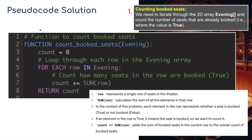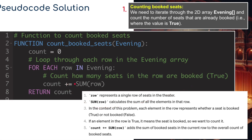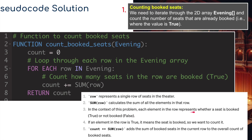So let's start with the first bit - counting booked seats. I've created a function called 'count_booked_seats' using the array 'evening', with comments throughout the code. We set the count to zero, then loop through each row in the evening array - 'for each row in evening' - and use 'count += sum(row)' then return the count. This counts how many seats in each row are booked. 'sum(row)' calculates the sum of all elements in the row - since each element is true or false, true counts as one. So 'count += sum(row)' adds the number of booked seats in the current row to the overall count, and we return it.